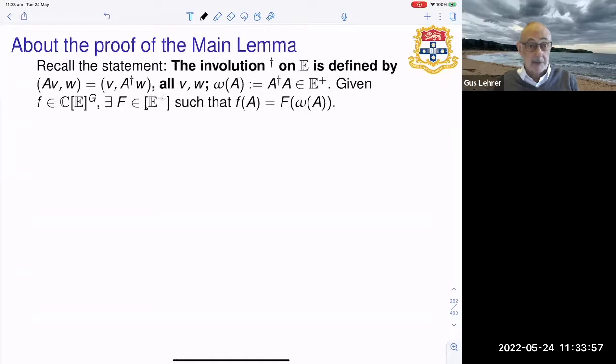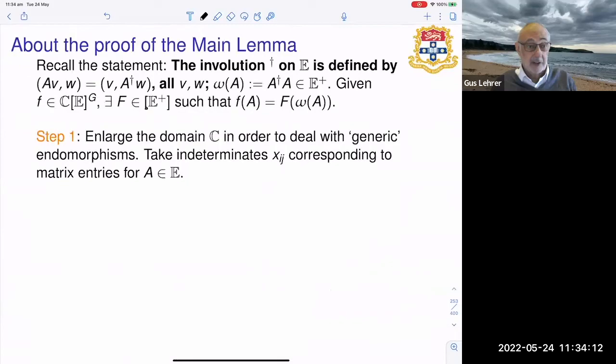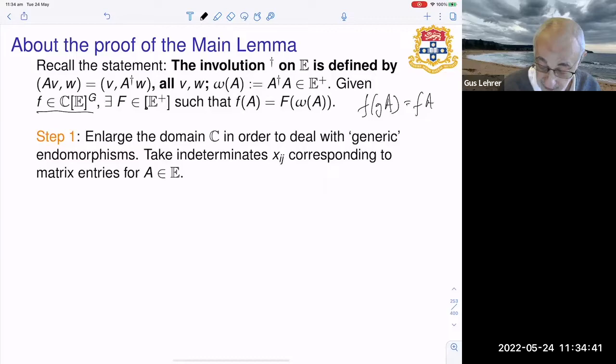We define an involution on the set of all endomorphisms of vector space v by that equation. We have this map omega which takes us from the endomorphisms to the dagger symmetric endomorphisms. It's a quadratic map and the statement is that if you have a function which is invariant under the isometry group, then you have an extension of this function to the dagger symmetric matrices.